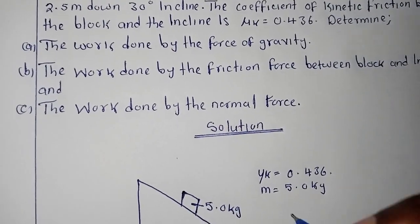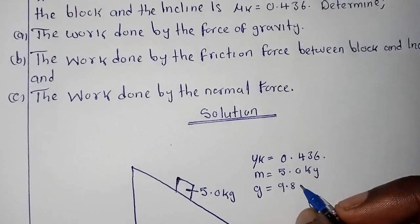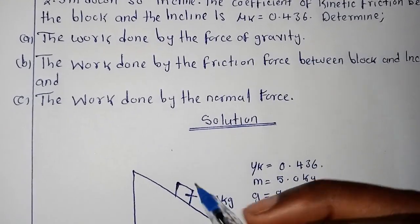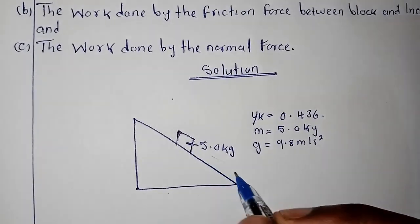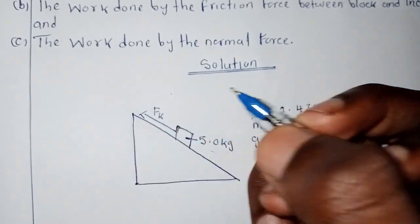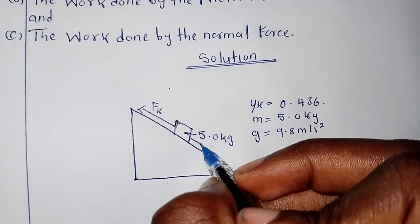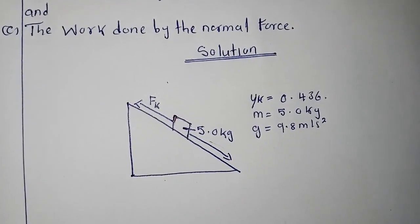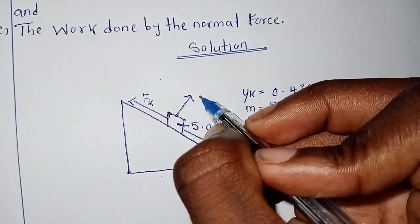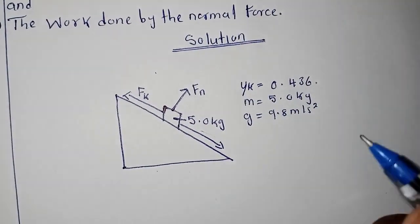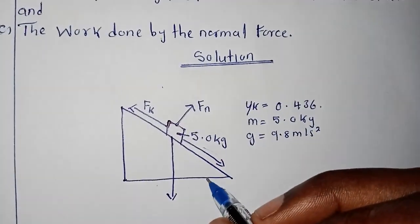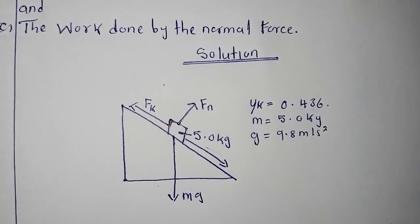The mass is 5.0 kg and gravity is 9.8 m/s². Because the block desires to move down the incline due to gravity, there is a kinetic friction force acting upward along the incline opposing motion. There is also a normal force acting perpendicular to the incline surface, and the weight mg acting downward.